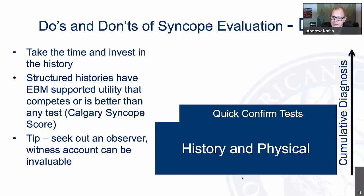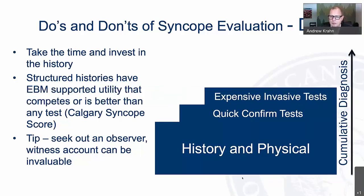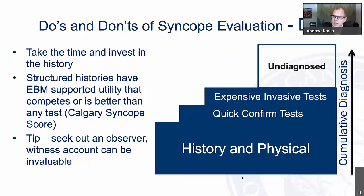Confirming tests can be straightforward. For example, a young patient with a story compatible with vasovagal syncope just needs an ECG to ensure there are no concerning findings, and that's all. More expensive or invasive tests — those involving hospitalization, provocation, or imaging — have relatively low yield. Recognize that a substantial number of people will remain undiagnosed. Invest in the history; it's the most valuable tool you have.